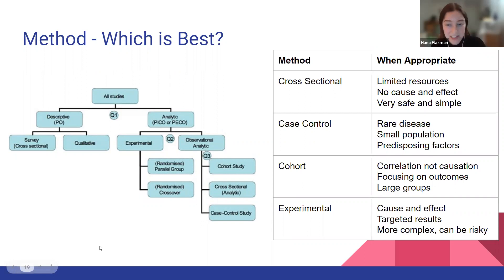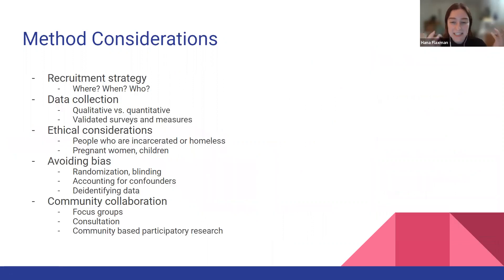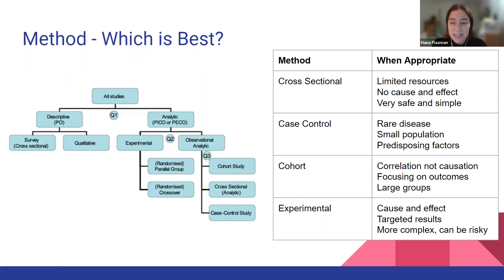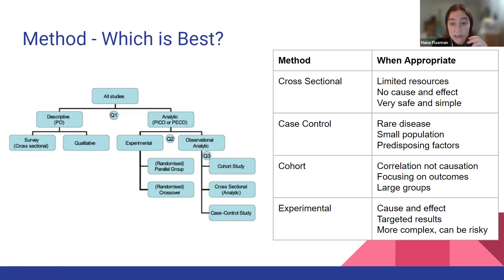That was a long explanation, but which of these do we think would be the best for this study? We want to look at how patients are adhering to their medication for those with chronic disease. We want to think about: is this a large or small patient population? And what is the best way to measure non-adherence?